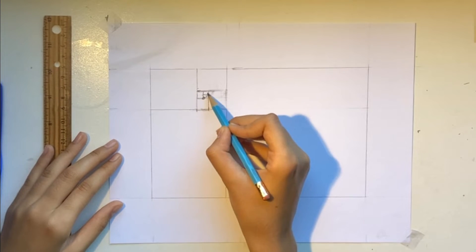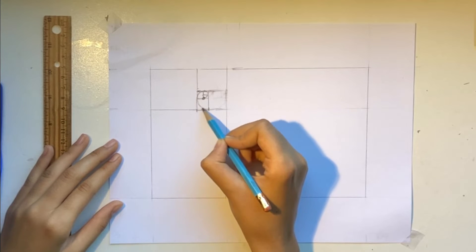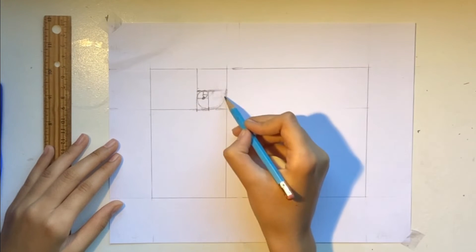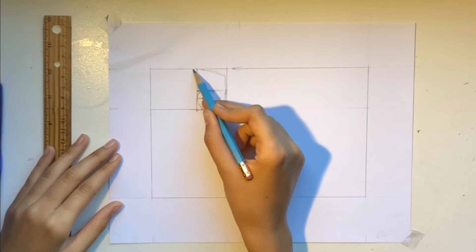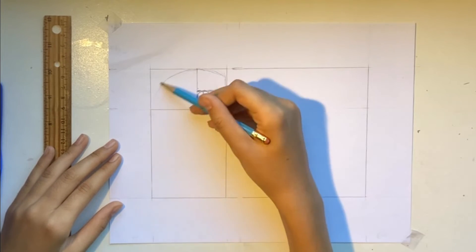We're going to start drawing our spiral from the middle of the golden ratio. Connect your spiral to all the corners until you've reached the end of the rectangle that we've drawn.